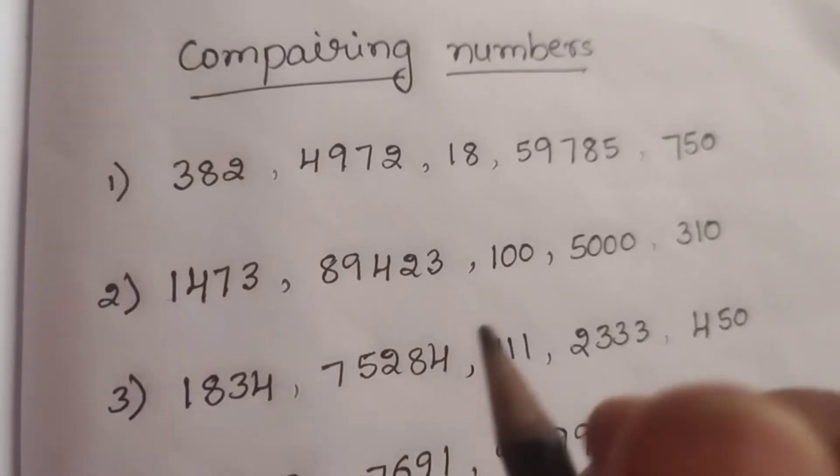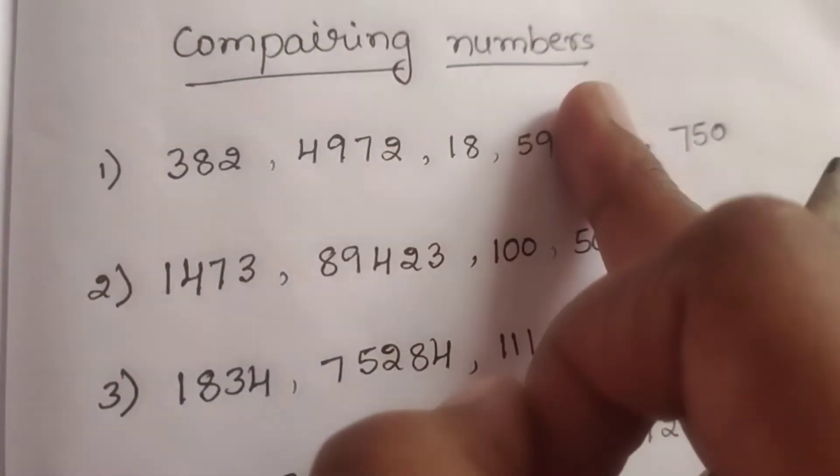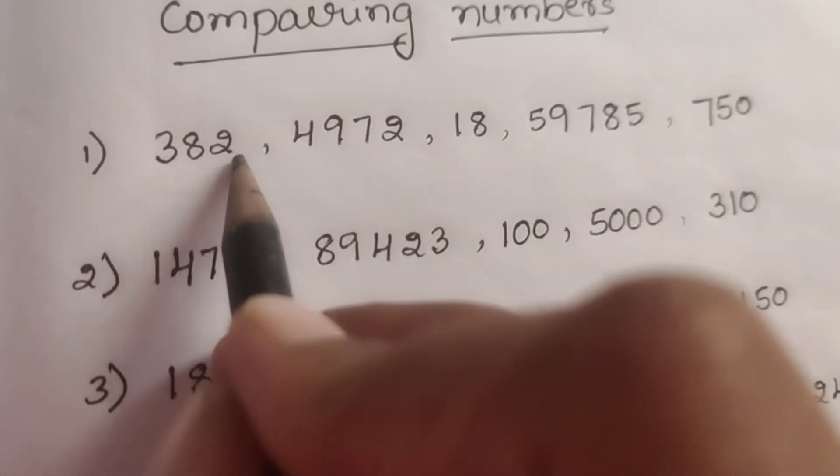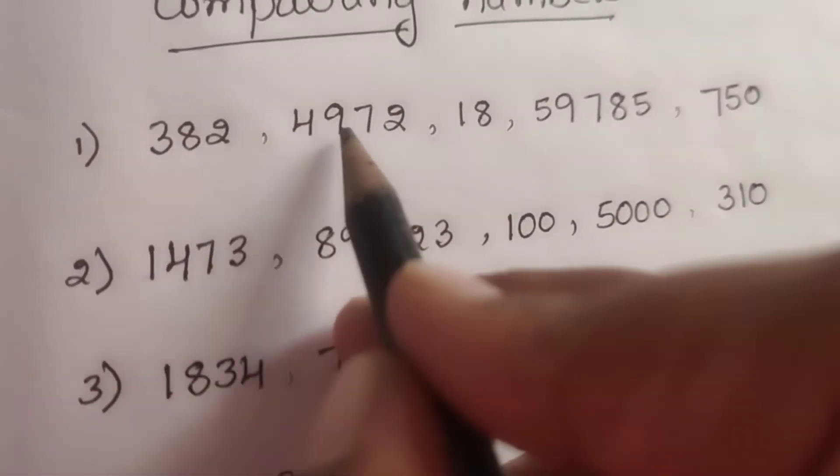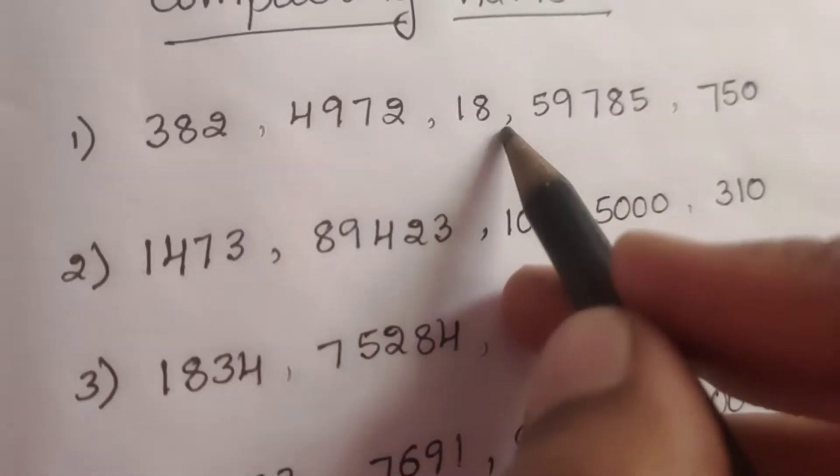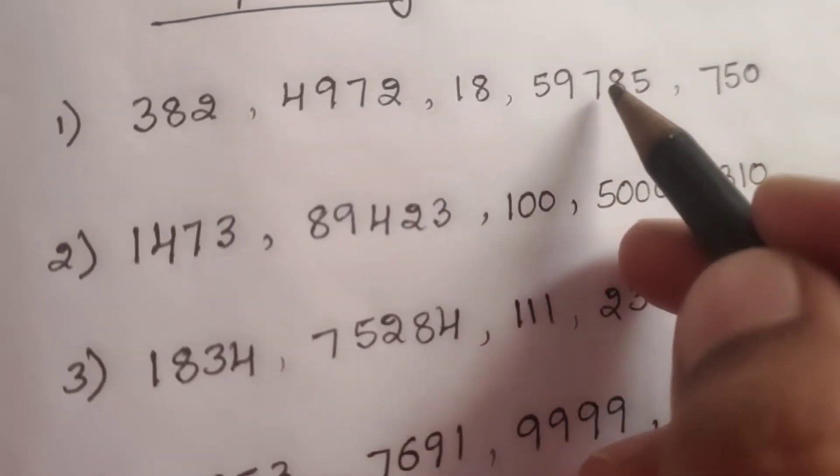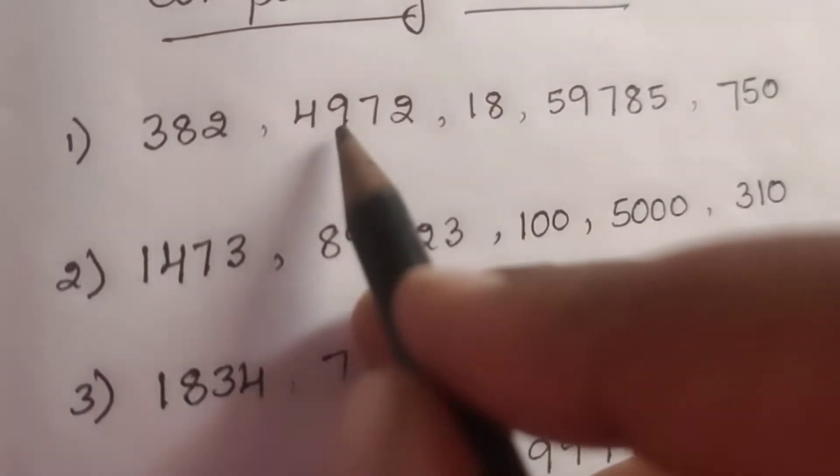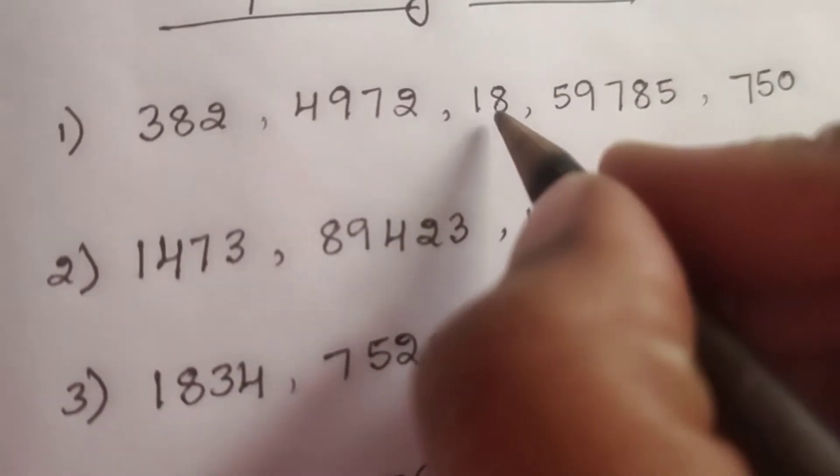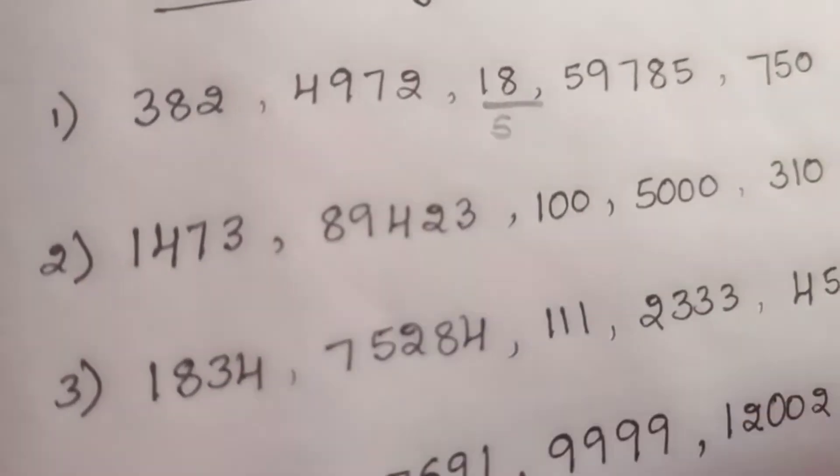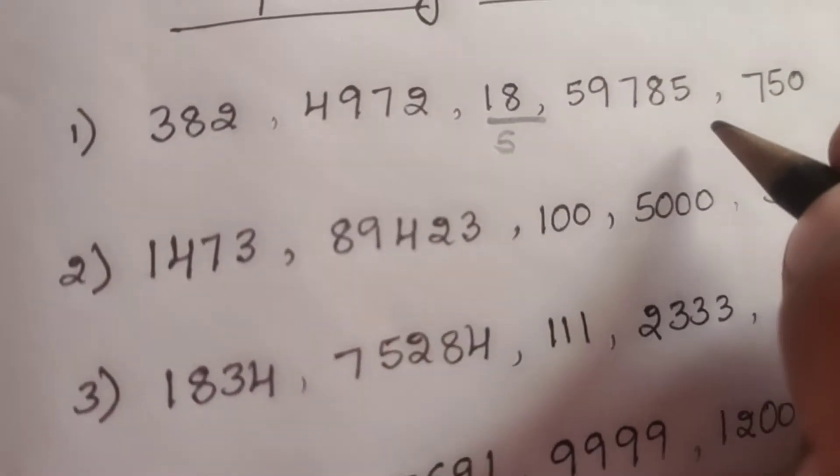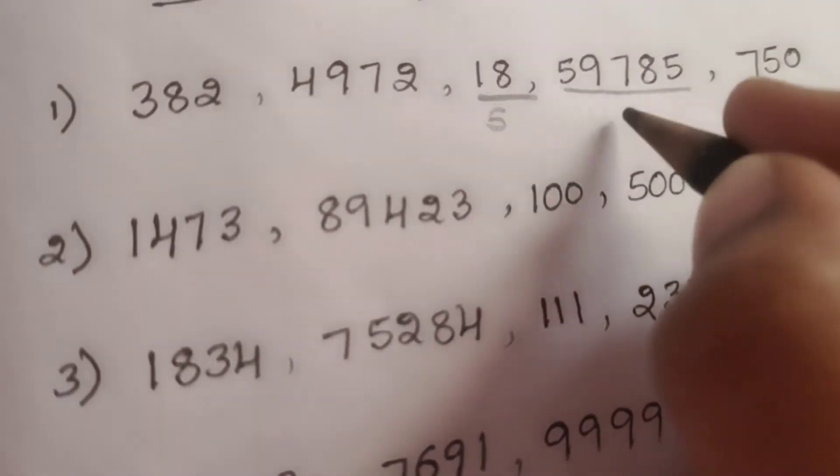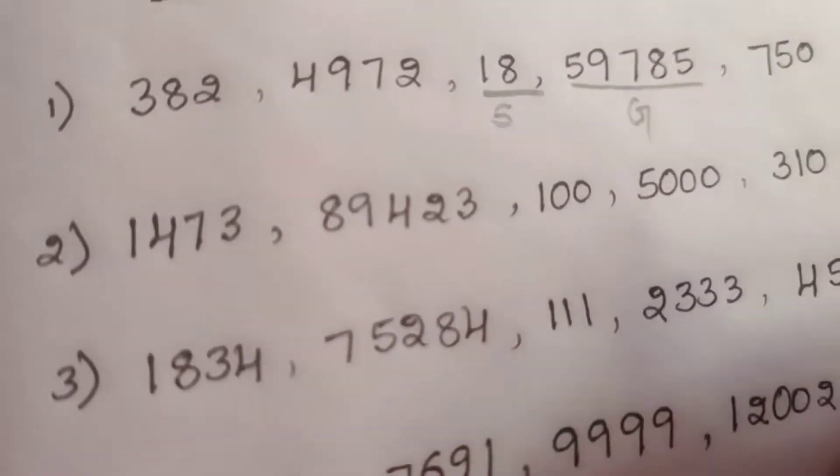First one: 382, 4972, 18, 59,785, 750. Which is the smallest number here? 18 is the smallest number and which is the greatest number? 59,785 is the greatest number.